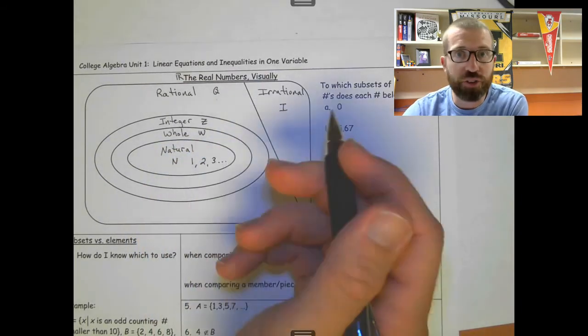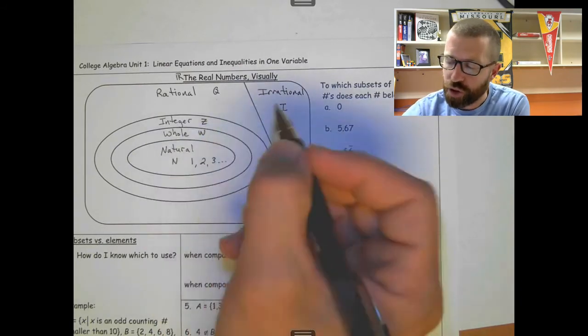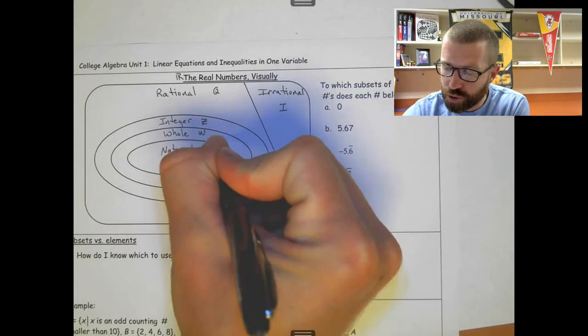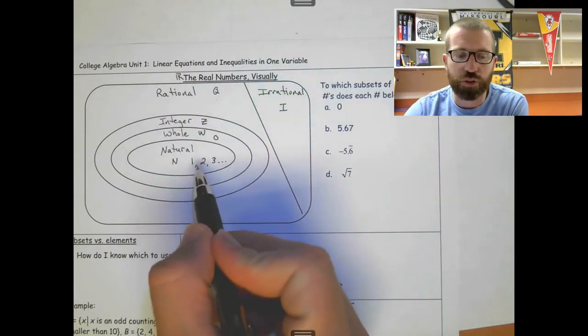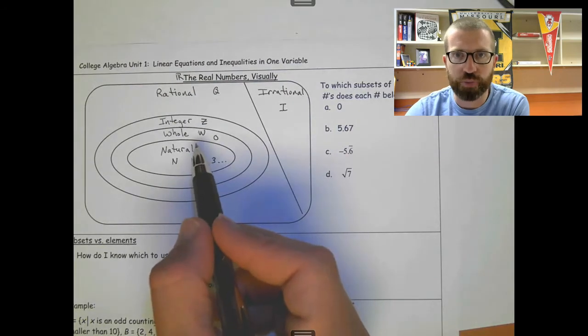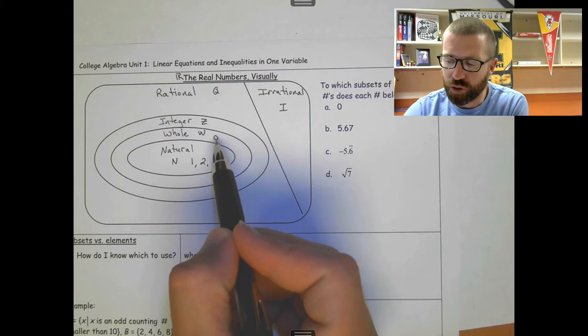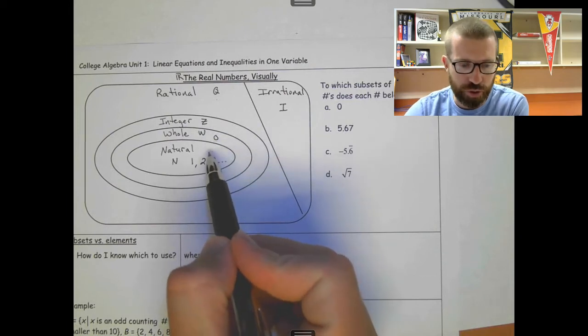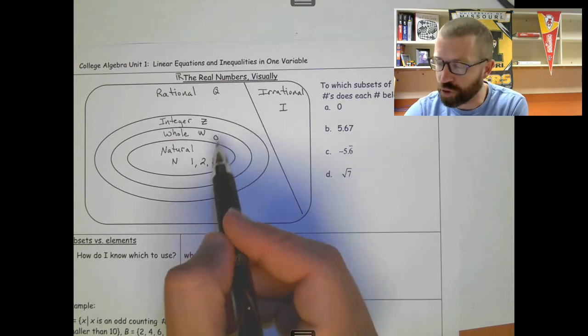So 1, 2, 3, only positive numbers with no decimals. Whole numbers include 0, so now we include 0 and then all of the natural numbers. So we can say natural numbers are a subset of the whole numbers. If a number is whole, it is also natural. This is kind of work your way down into the circles or ovals there.